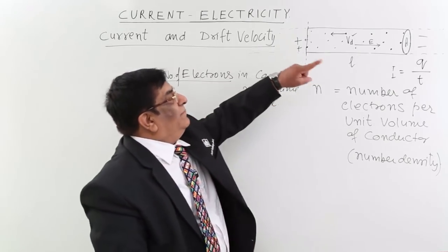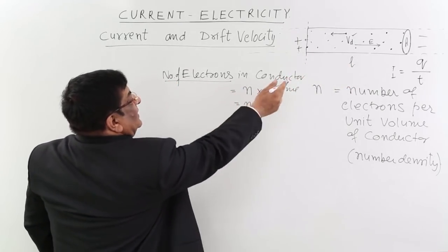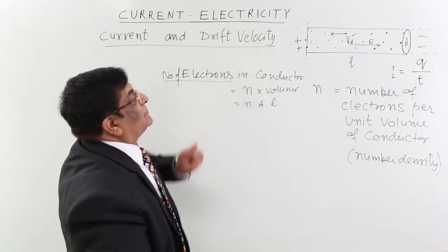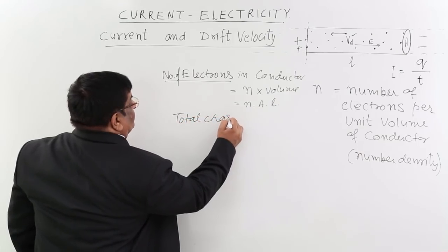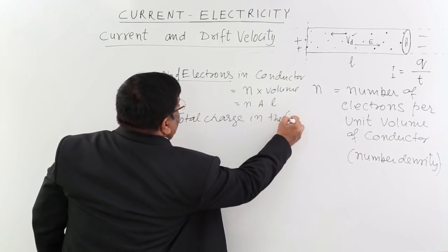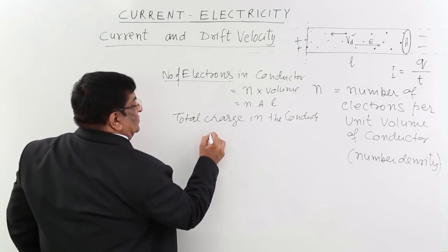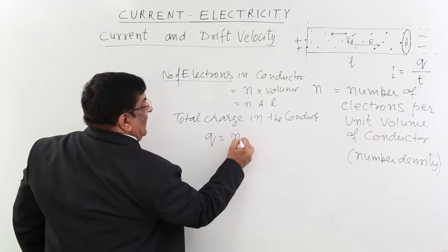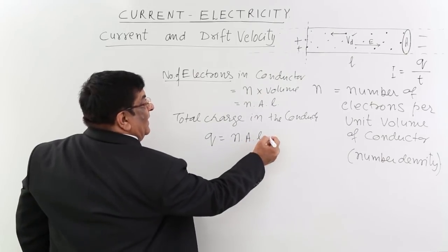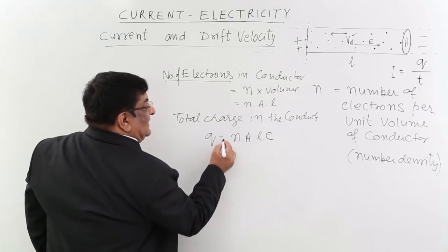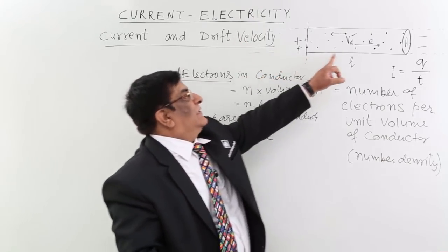This is the volume: area times length. So the number of electrons in the conductor is n·A·L. The total charge Q in the conductor is equal to the number of electrons multiplied by the charge on one electron, giving Q = n·A·L·(−e). This is the total charge inside this conductor.